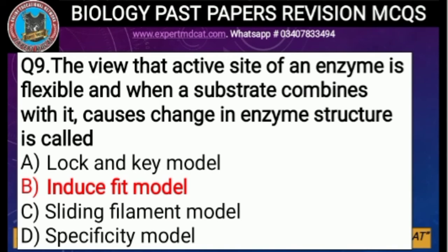Question number nine: the view that the active site of an enzyme is flexible and when a substrate combines with it, it causes a change in enzyme structure — this is called. This model is the induced fit model, proposed by Daniel Koshland in 1959. In contrast, the lock-and-key model treats the active site as a rigid structure specific to the substrate. In the induced fit model, the substrate causes conformational change in the enzyme.